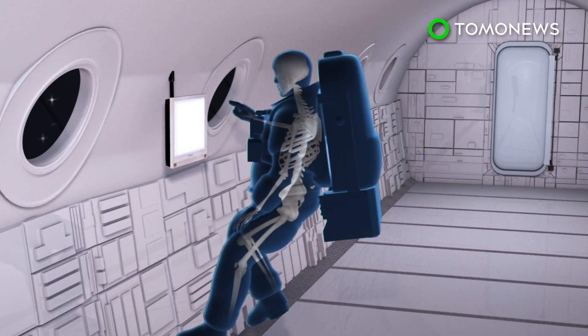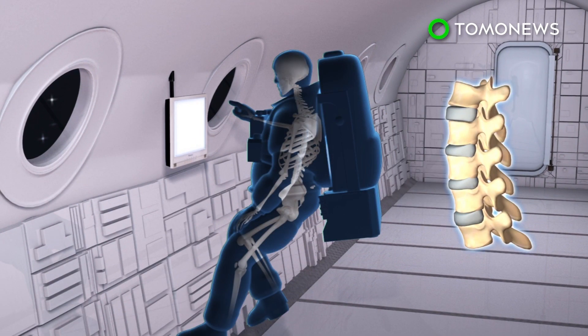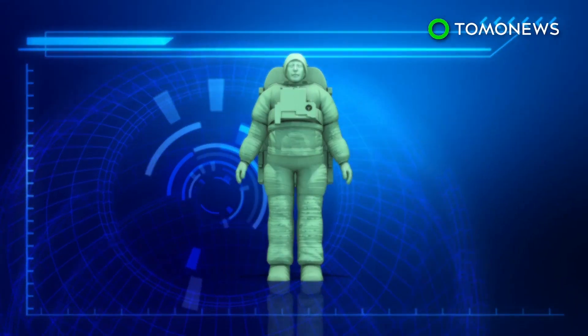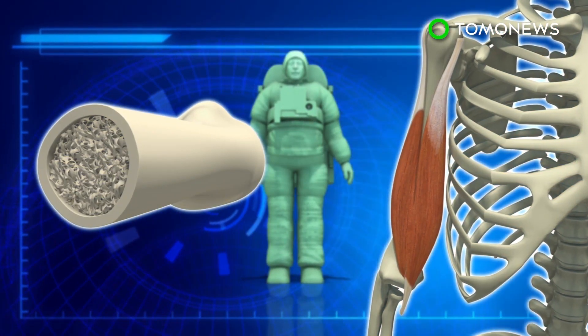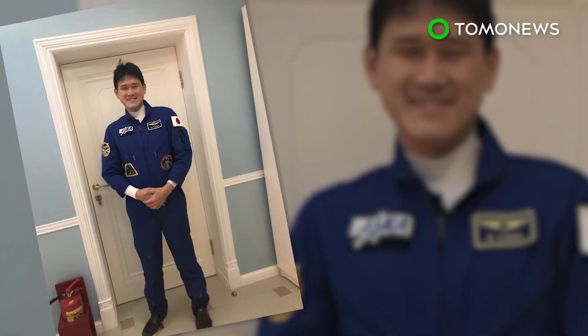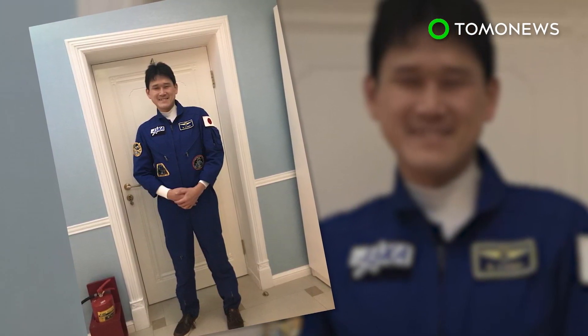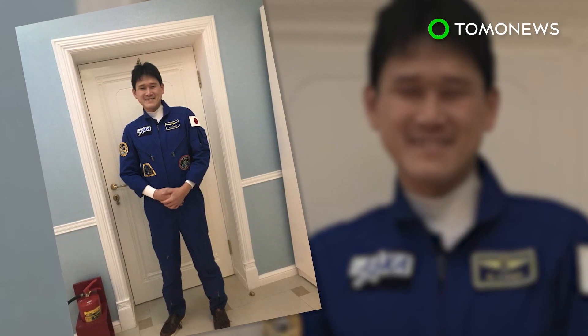In space, astronauts' spines often expand due to the lack of gravity. This results in a height increase. Height returns to normal after the astronaut returns to Earth. Astronauts can also experience a loss of bone minerals and muscle mass. Kanai was worried that he might not be able to fit into his return craft, a Russian Soyuz, after thinking he had grown over a quarter foot. But now, he should be just fine.